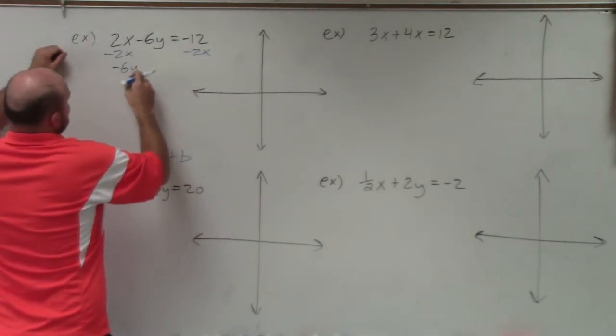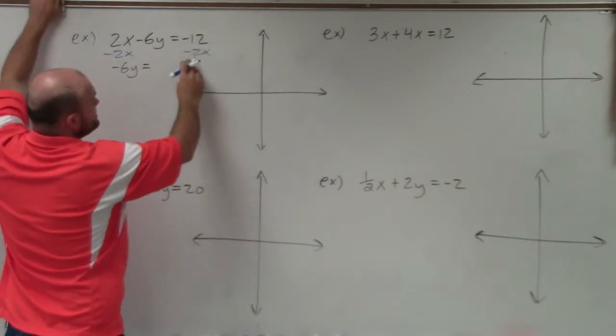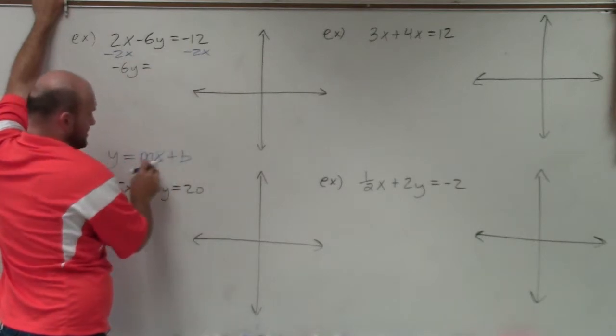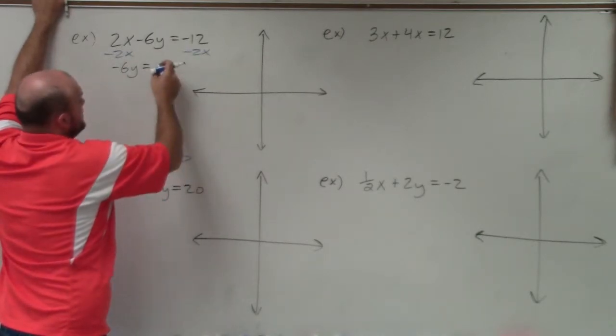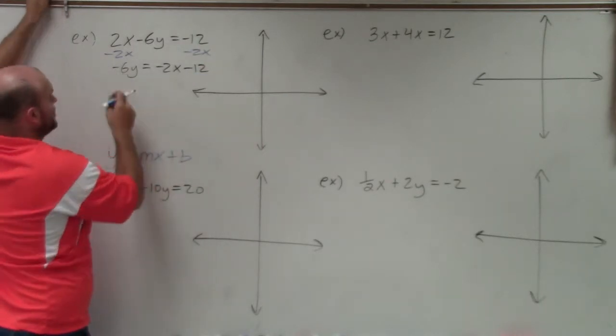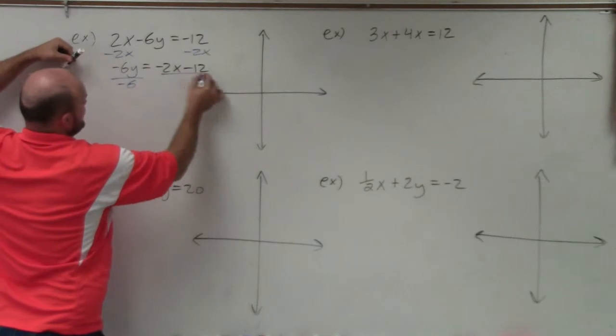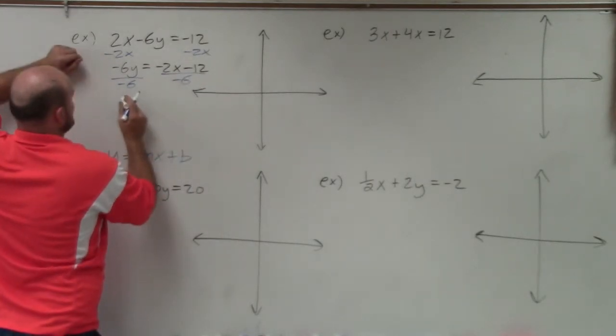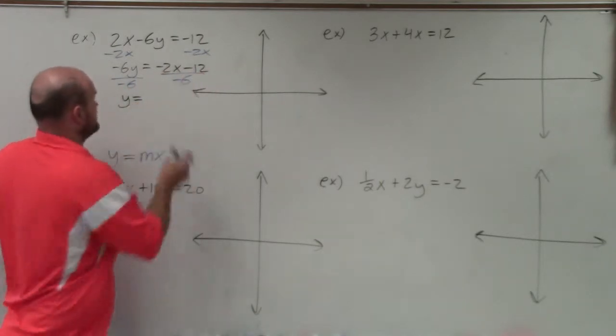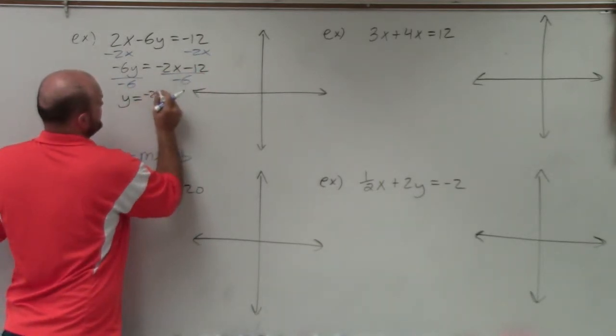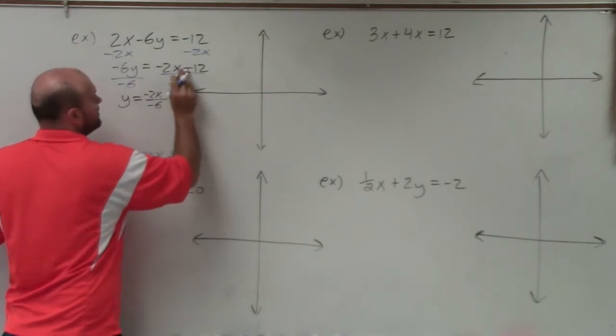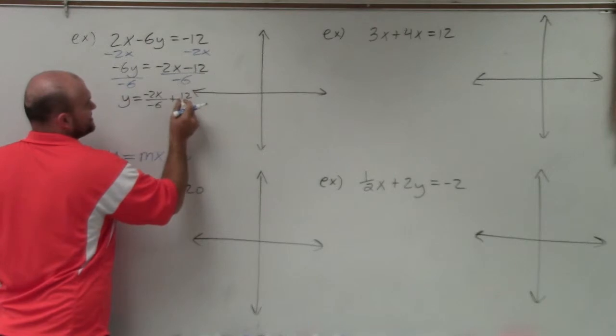So if we want to put this in slope-intercept form, that means I need to solve for y. Well, how do you get y by itself? Well, right now my y is being multiplied by a negative 6 and is being added by a 2x, because that 2x is positive. So the first thing I'm going to do is I'm going to subtract a 2x on both sides. Therefore, that's going to give me a negative 6y equals. Now, you cannot subtract negative 2x from 12x. So I'm going to write the 2x in front, because we always write the x in front of our constant. So that's going to be written as a negative 2x minus 12.